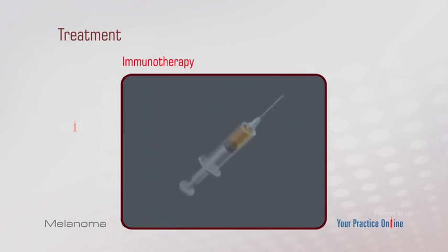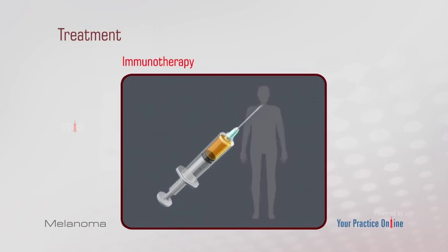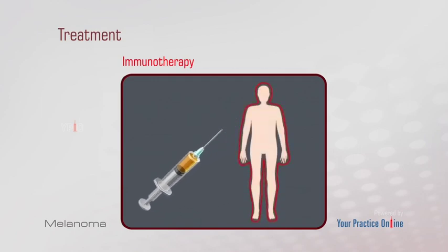Immunotherapy, also known as biological therapy, uses the body's immune system to fight cancer or reduce side effects caused by some cancer treatments. Some forms of immunotherapy are cytokines, such as interferon-alpha and interleukin-2, T-cell therapy, and vaccine immunotherapy.